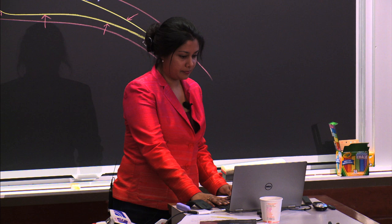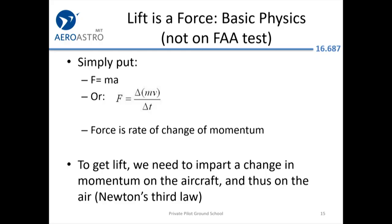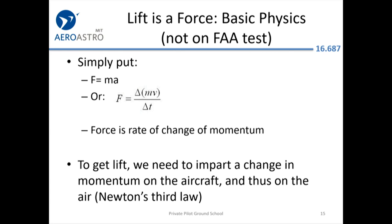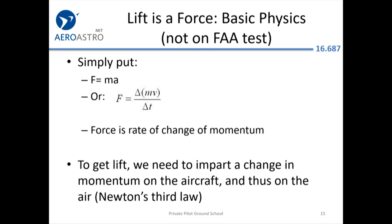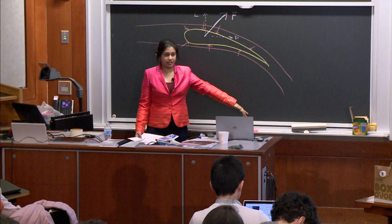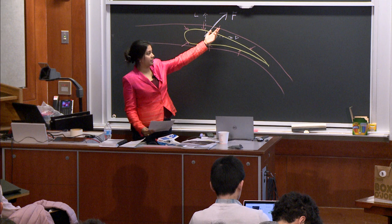We have F equals ma. Acceleration is change in velocity over time. Velocity is a vector — it has both magnitude and direction, so you can change velocity by changing either one. In the case of an airfoil, we're changing the direction of the air. The air has velocity coming in; we're changing the direction of that air, and that's generating the lift. The force F here represents the rate of change of momentum — pushing those air molecules down and generating a force that creates lift on the airfoil.